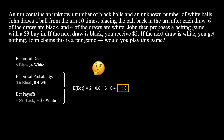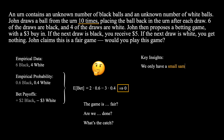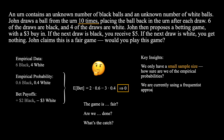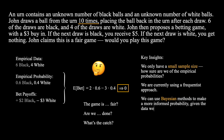The game is fair? Are we done? The catch is that we only drew from the urn 10 times, so we only have a small sample size. How sure are we of these empirical probabilities? We are currently using a frequentist approach. Instead, we can use Bayesian methods to make a more informed probability given the data we have.